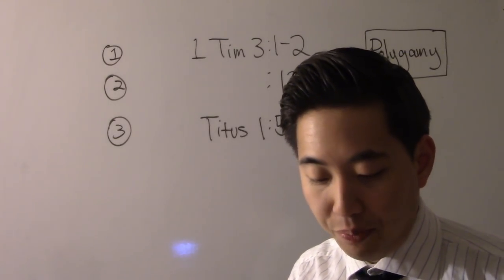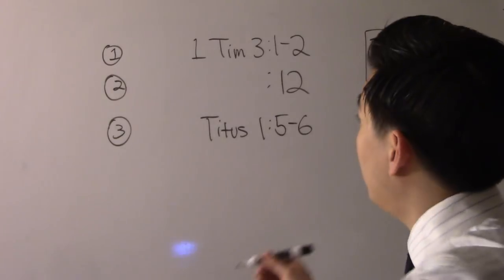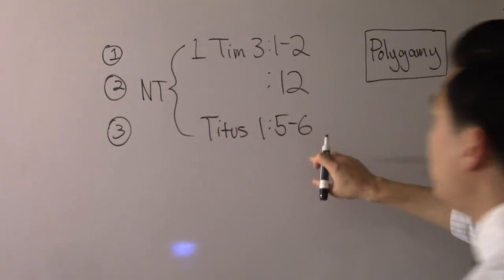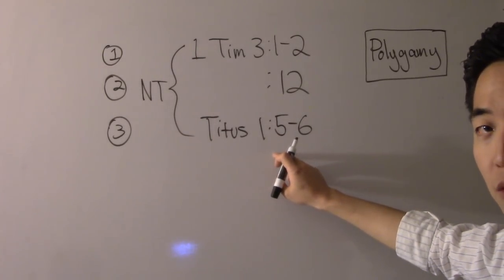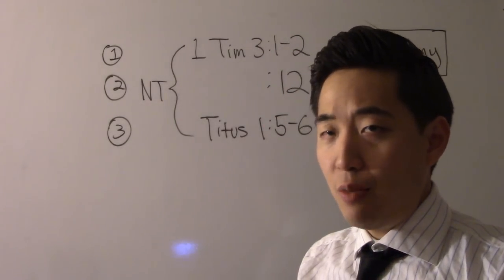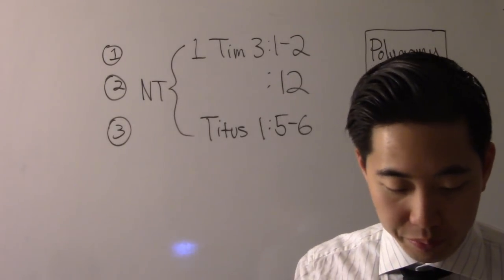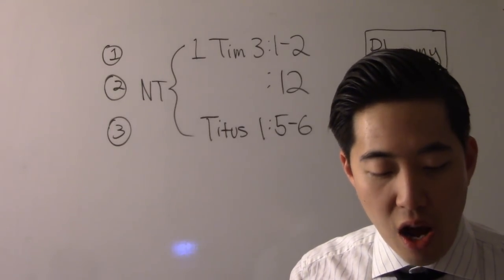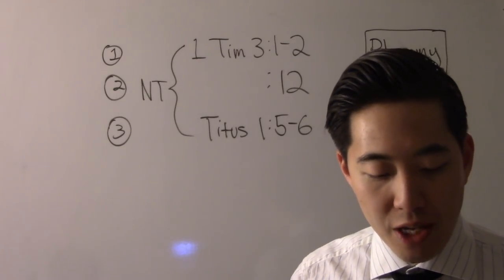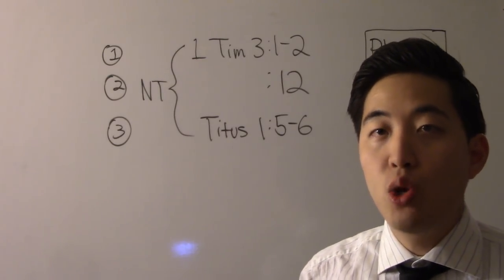We're going to start off with 1 Timothy chapter 3. Now the simple answer is this: God says in the New Testament that we are not to have multiple wives. In the Old Testament they had that at that time, but today in the New Testament we are not supposed to have multiple wives. Verse 1: This is a true saying. If a man desire the office of a bishop, he desireth a good work. So this is a pastor. A bishop then must be blameless, the husband of what? One wife. It specifically said one wife, so it condemns polygamy.